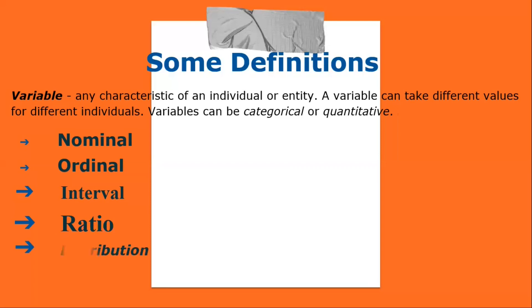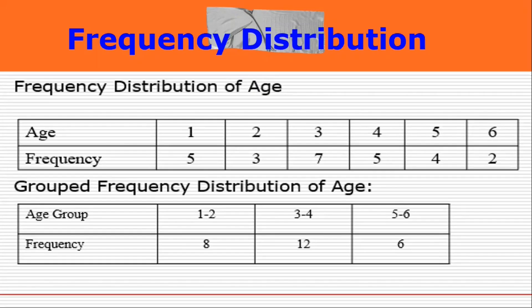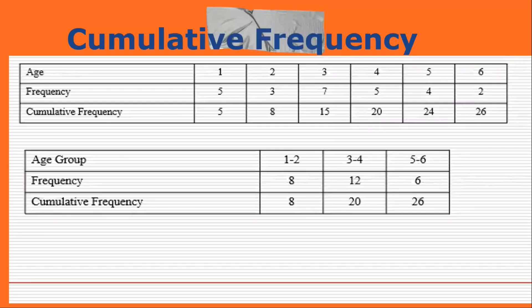The distribution of a variable tells us what values the variable takes and how often it takes these values. Distributions can be unimodal, having a single peak, bimodal, having two distinct peaks, or symmetric, where the left and right halves are mirror images. Consider a data set of 26 children of ages one to six years — the frequency distribution and cumulative frequency of the variable age can be tabulated.